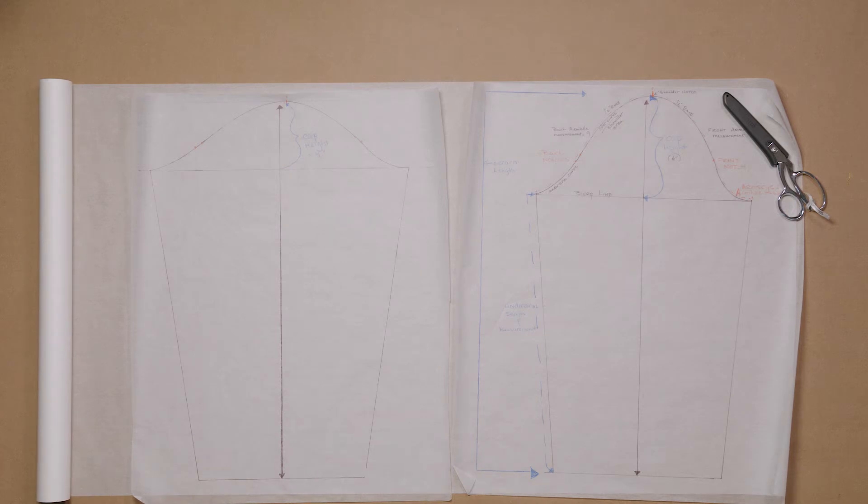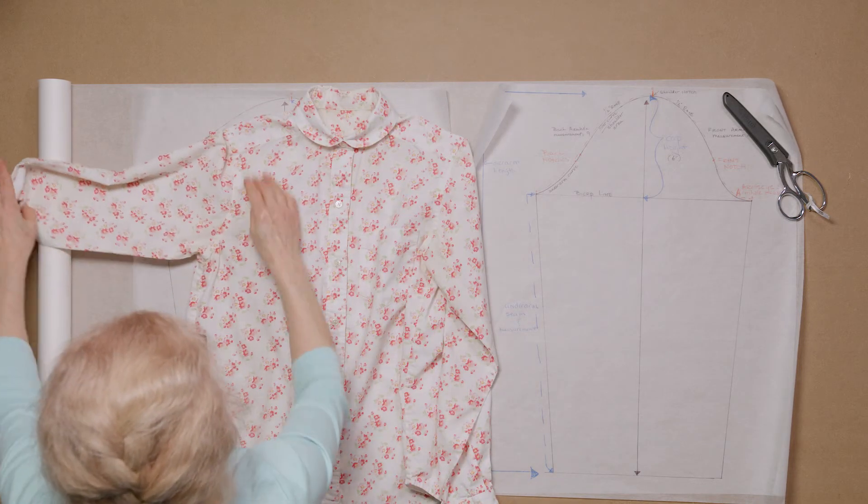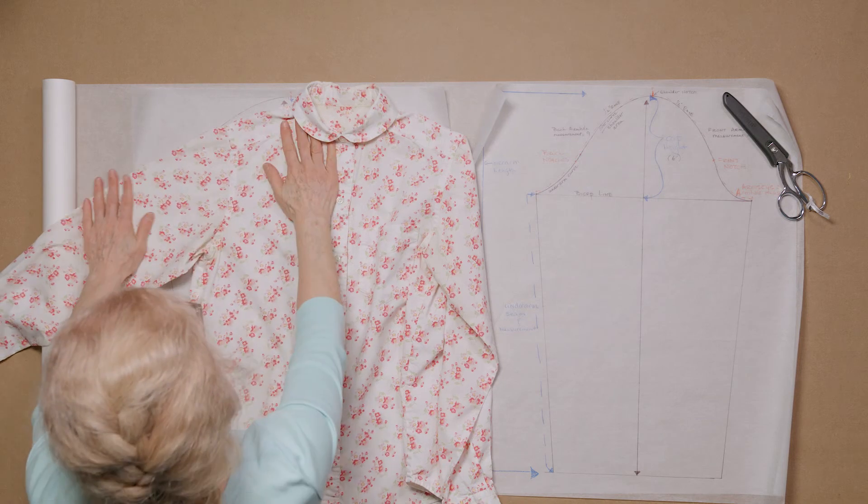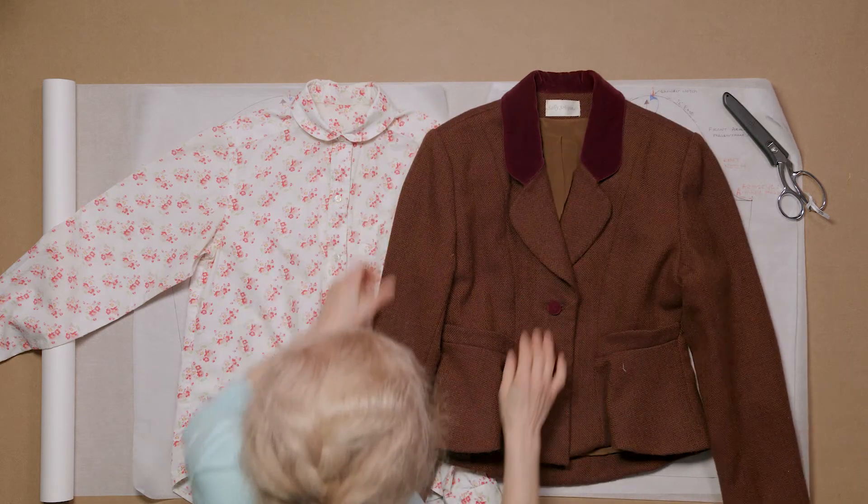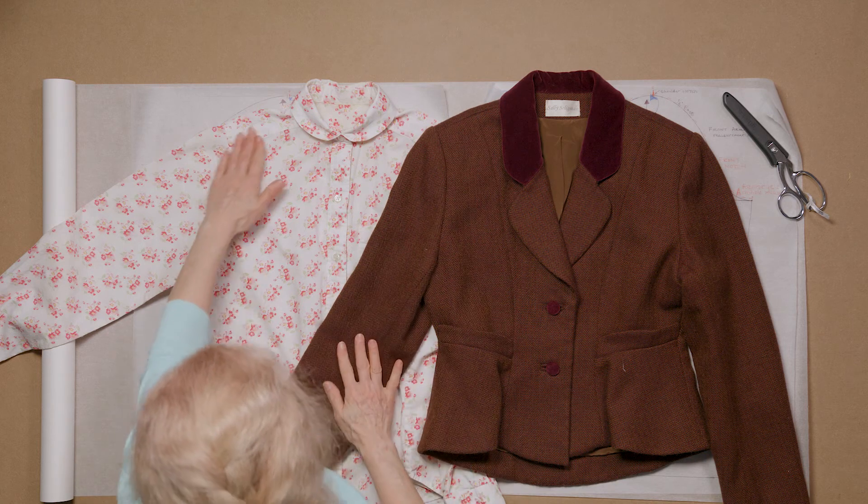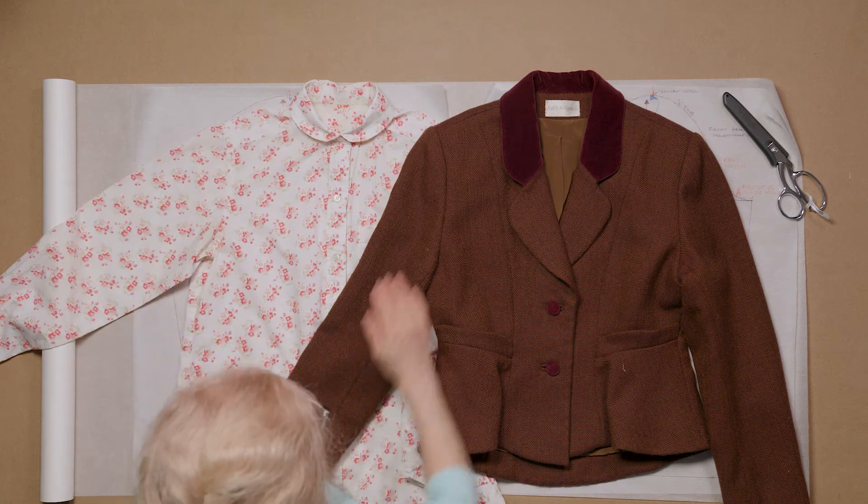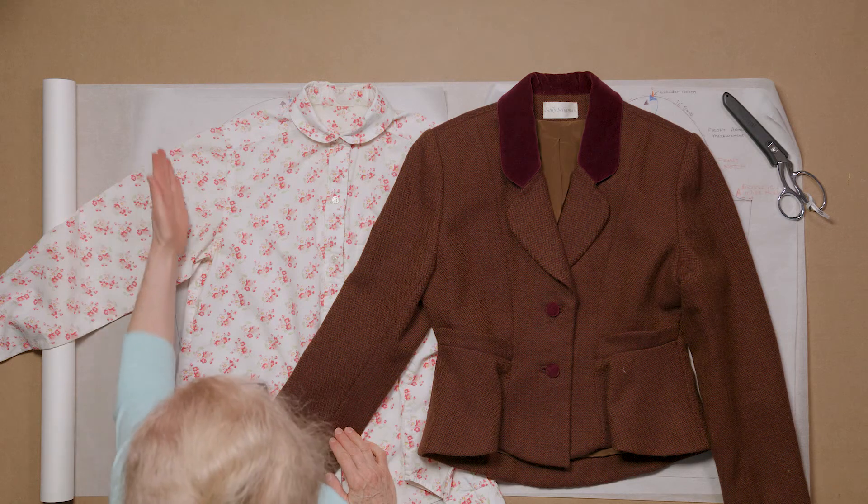When we have a casual shirt, we usually have a shorter armhole. Look at the angle that this goes off the shoulder. And now let's look at the angle of the jacket. I'm not forcing these. See, that's laying flat, and that's laying flat. And you can see this is a shorter cap.